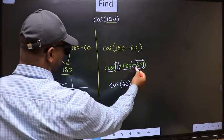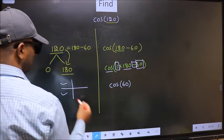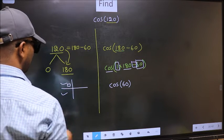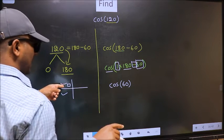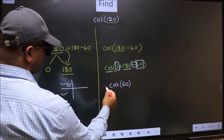Here we have negative. That means the angle lies in the second quadrant. And in the second quadrant, cos is negative. So, we should put negative.